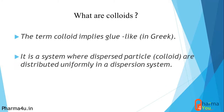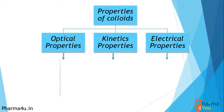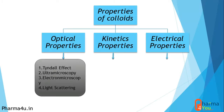In general, a colloid is a system where dispersed particles fall within the colloidal size range. If particles are very small they are molecular; above that they are colloids; and above that they are coarse particles. A system where dispersed particles of colloidal range are uniformly distributed is called a colloidal system. The particle size range for colloids is 0.5 to 1 micrometer.